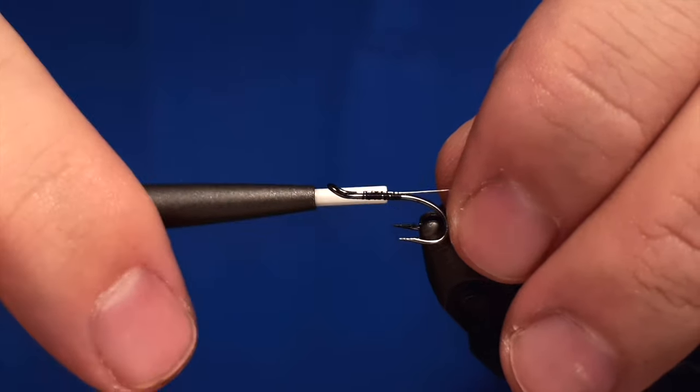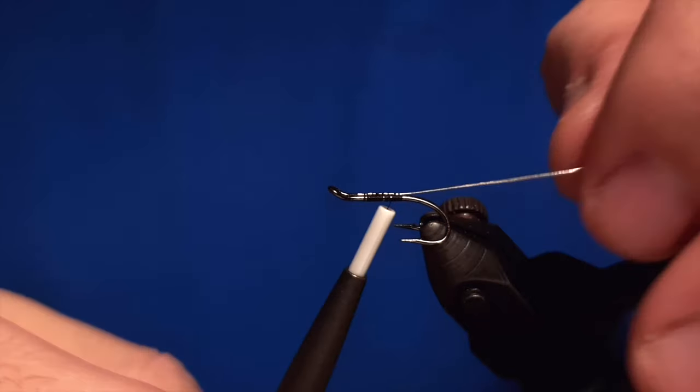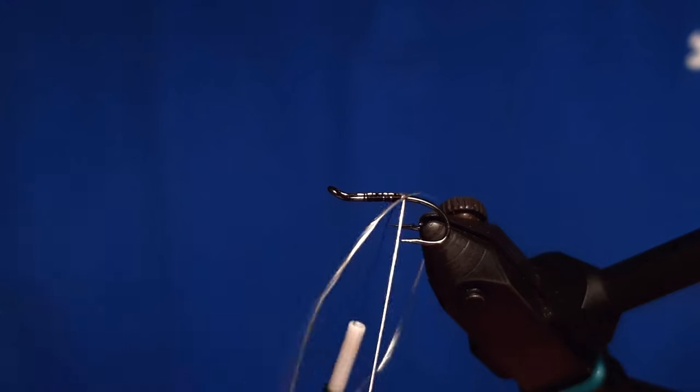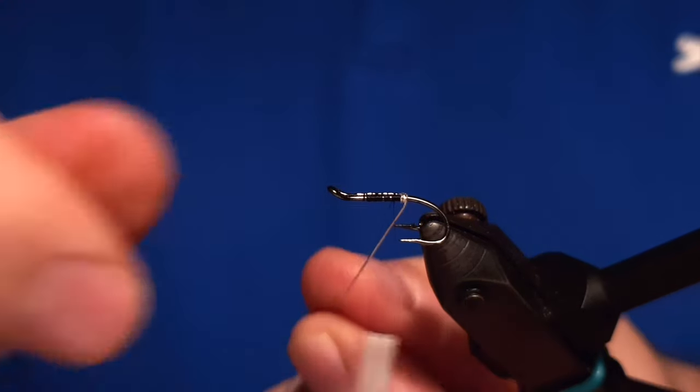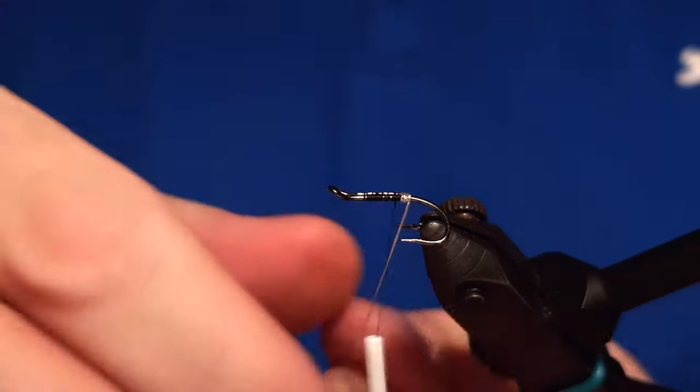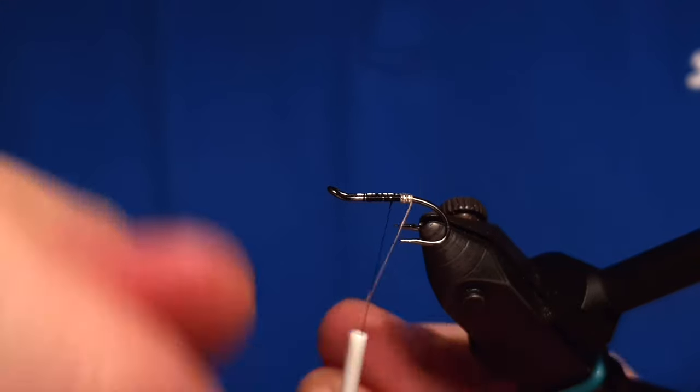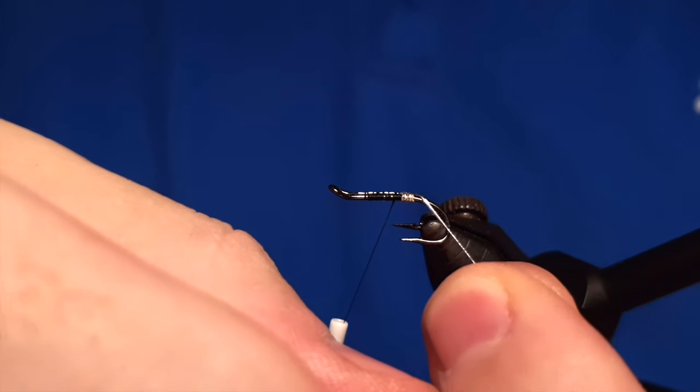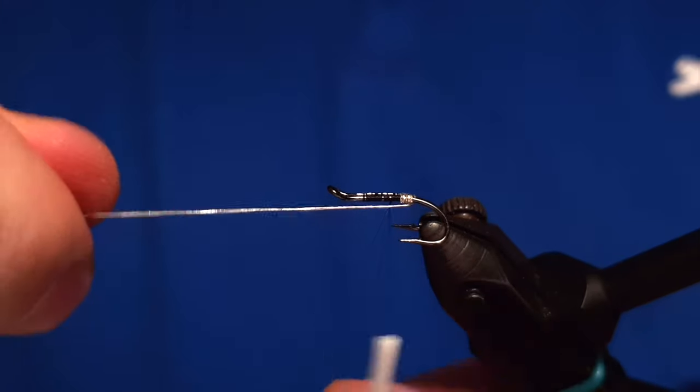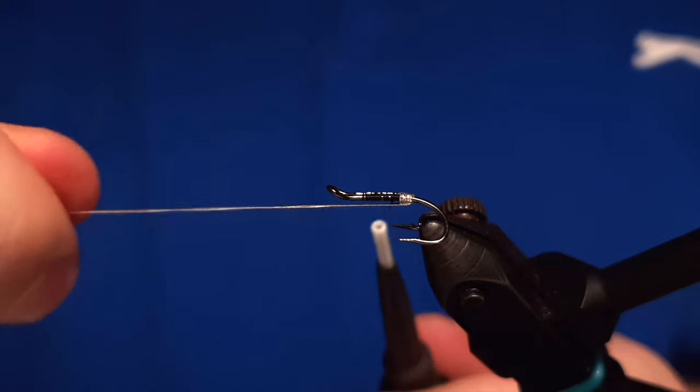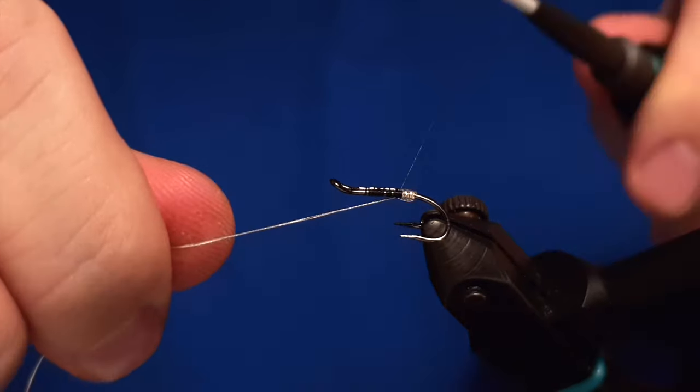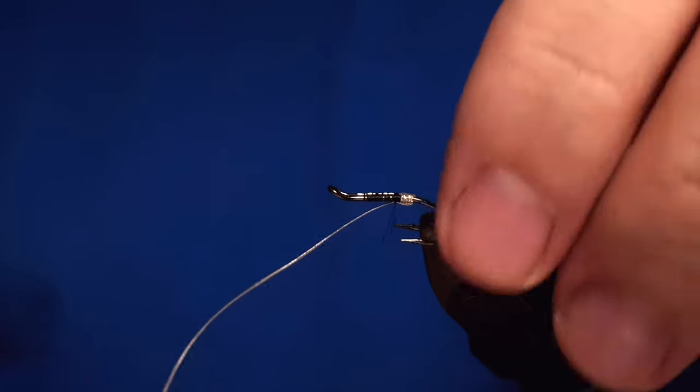We are using an Arax hook number 10 for this fly and we start by making the butt of the fly by wrapping an oval tinsel around and finishing the oval tinsel by getting it behind like that and under the shank of the hook and attach it there.